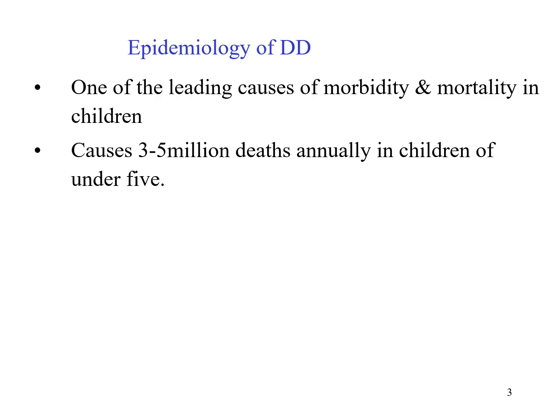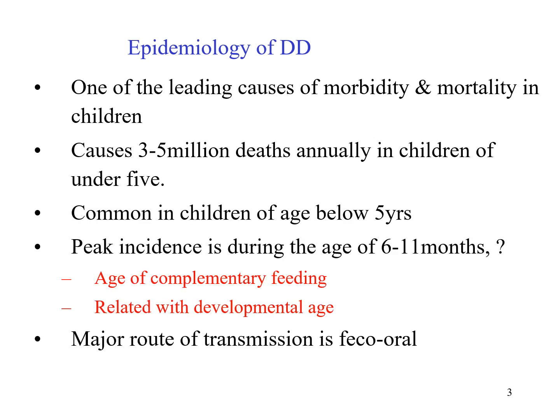When we consider the epidemiology of diarrheal disease, diarrhea is one of the leading causes of morbidity and mortality in children. It causes 3 to 5 million deaths annually in children under 5. It is most common in children below 5 years and the peak incidence is during age 6 to 11 months. This is because 6 to 11 months is the age of complementary feeding, and developmentally, children put everything in their mouths. The major route of transmission is feco-oral.